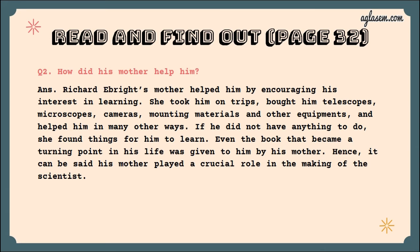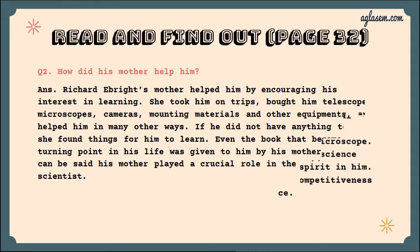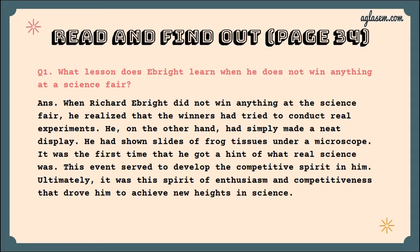Question number two: how did his mother help him? Richard's mother helped him by encouraging his interest in learning. She took him on trips and bought him a telescope, microscope, camera, mounting material, and other equipment. If he did not have anything to do, she found things for him to learn. Even the book that became a turning point in his life was given to him by his mother. Hence, his mother played a crucial role in the making of the scientist.